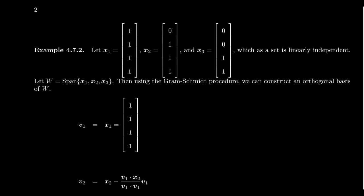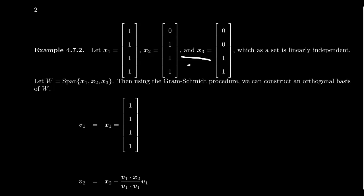So let's show you an example of how this process works in practice. Take the following three vectors: X1 = (1, 1, 1, 1), X2 = (0, 1, 1, 1), and X3 = (0, 0, 1, 1). This forms a subspace W of R^4, where W is the span of X1, X2, X3. If we apply the Gram-Schmidt process, a quick check shows they're not orthogonal: X1·X2 = 3, X1·X3 = 2, and X2·X3 = 2. Step one of Gram-Schmidt is easy: just take V1 = X1 = (1, 1, 1, 1). No changes whatsoever.